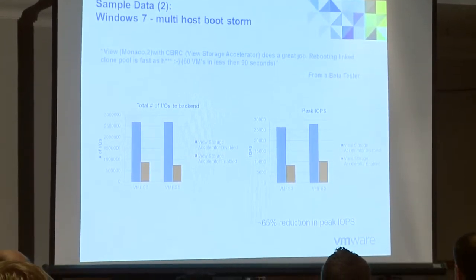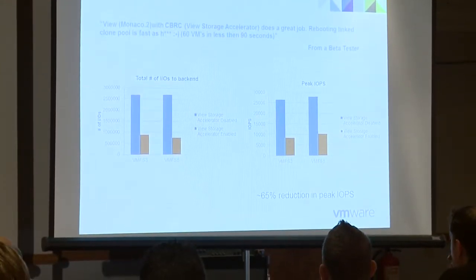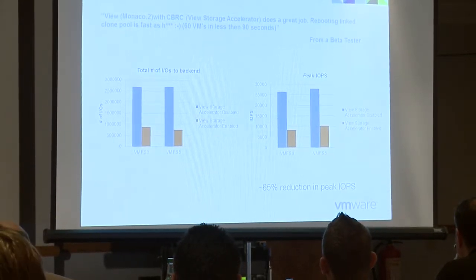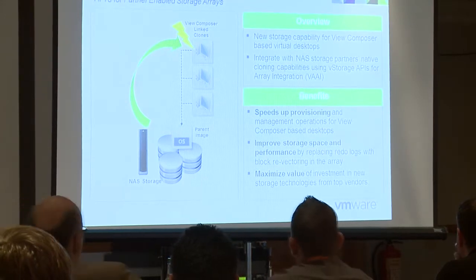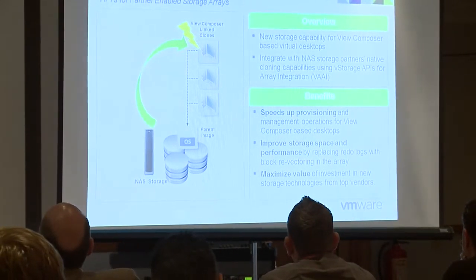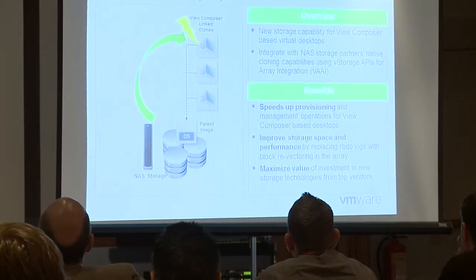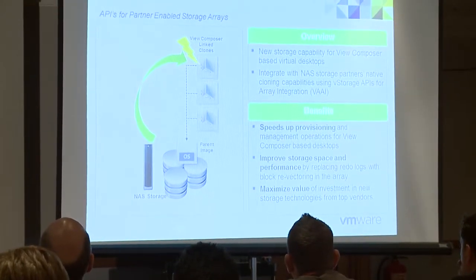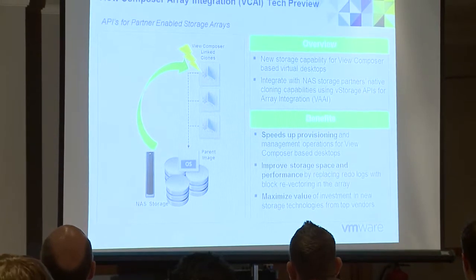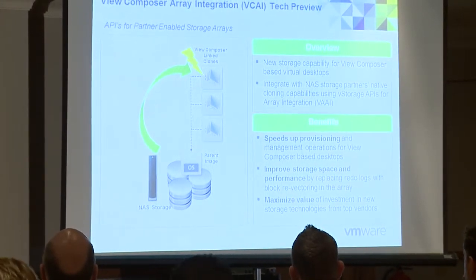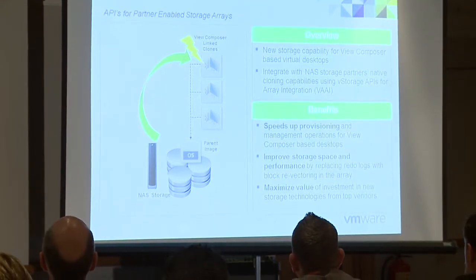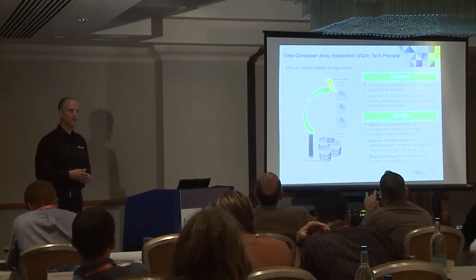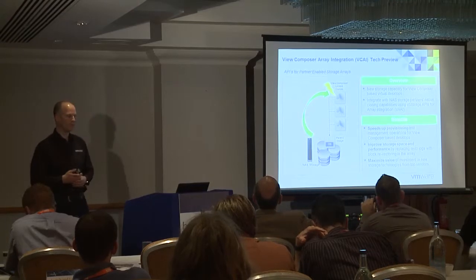We've also got array integration — how we spin up and clone desktops using Composer. We now integrate with NFS arrays, so we can get the array to offload and do the work for us. Instead of Composer or vSphere doing the clone operation, we tell the SAN to do it — it's going to be a lot quicker. This speeds up operations like creating desktops, re-provisioning, and re-composing a pool.